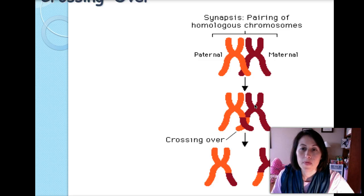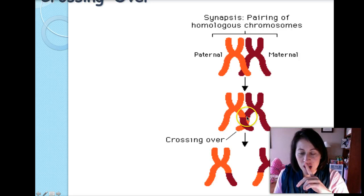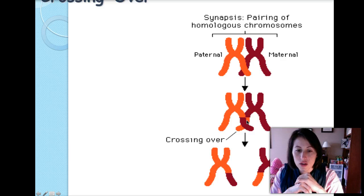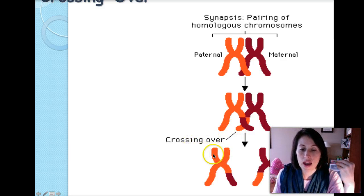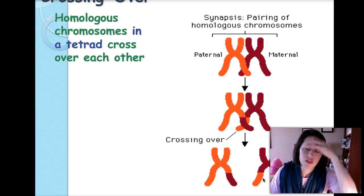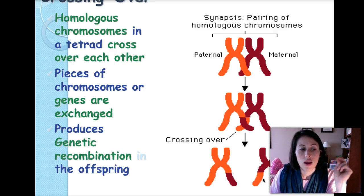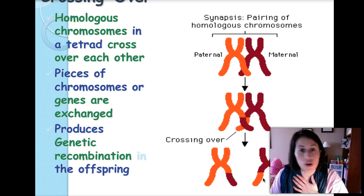In crossing over, the paternal chromosome — the one inherited from your father — and the maternal chromosome exchange genetic information wherever they touch. When they pull apart, the chromosome inherited from your father has a little bit of your mom's genes on it, and the chromosome inherited from your mother has a little bit of your father's genes on it. This produces genetic recombination, guaranteeing that offspring will not have the same combination of genes — it provides genetic variation.